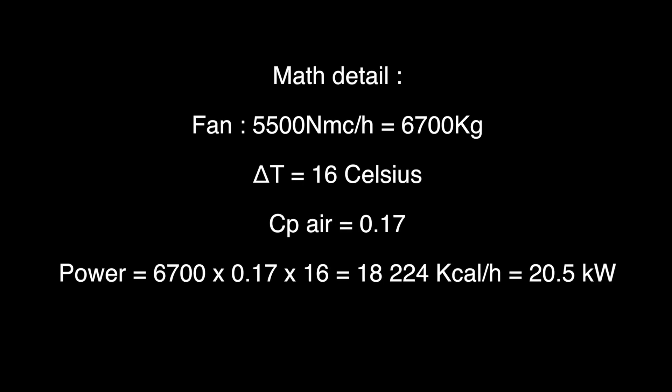The fan is 5,500 effective cubic meters per hour, which sums up to 6,700 kilograms. We have a delta T of 16 degrees Celsius. The specific heat of air is 0.17 more or less. The power is 6,700 times 0.17 times 16 and makes about 20.5 kilowatts of power.